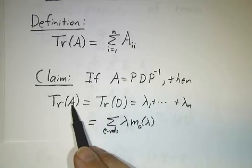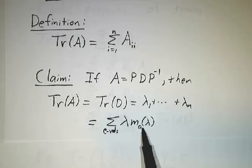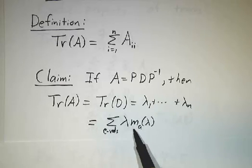In other words, the trace of any matrix is the sum of the eigenvalues counted with multiplicity. If an eigenvalue has multiplicity 3, you count it three times.